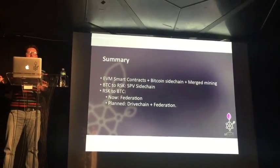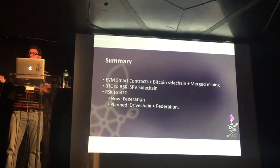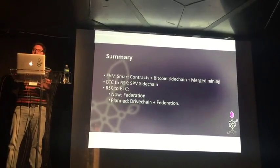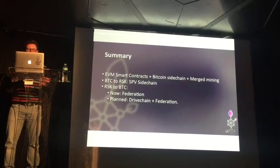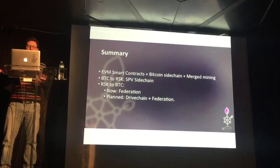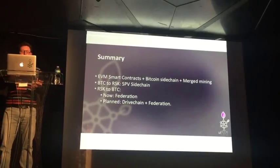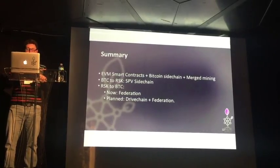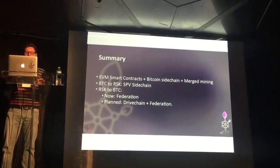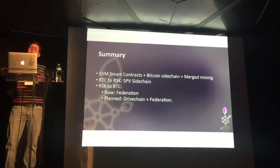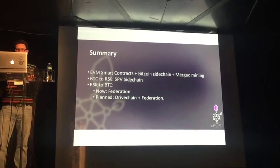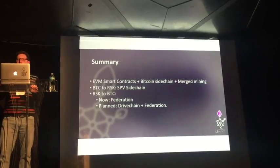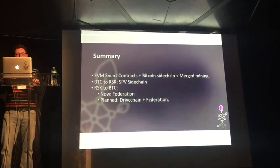To sum up: RSK is a blockchain where you can run EVM-style smart contracts. It's implemented as a Bitcoin sidechain, so we use Smart Bitcoin as a currency, and it's mined through merged mining with the Bitcoin blockchain. We have a hybrid model — to send money to RSK we use an SPV sidechain, and to send money back to Bitcoin we use the Federation. We have presented a Bitcoin improvement proposal to make a drivechain, so once that moves forward, we will move to a model where a drivechain plus federation is managing the transfer from RSK to Bitcoin.